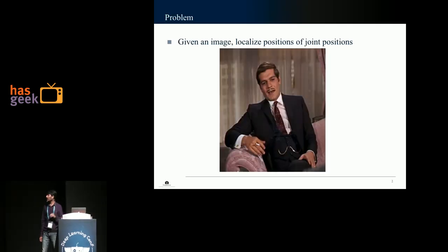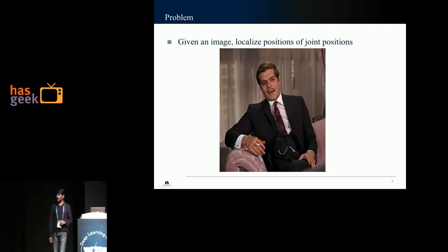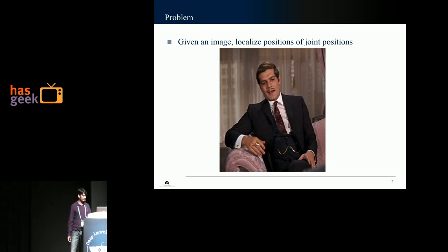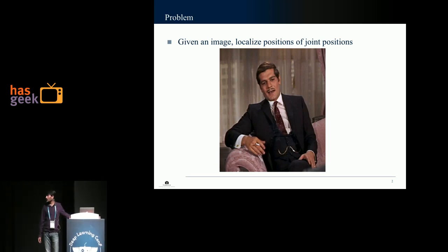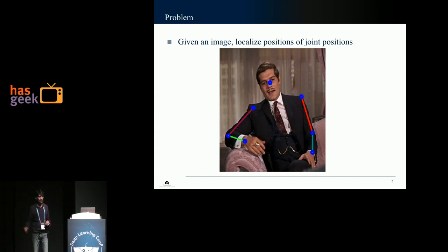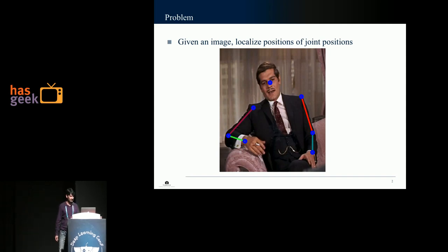So what do I mean by human pose estimation? Given an image such as this one, what we want to be able to do is detect joint locations such as the point between the eyes, the shoulder, elbow, wrist, etc.